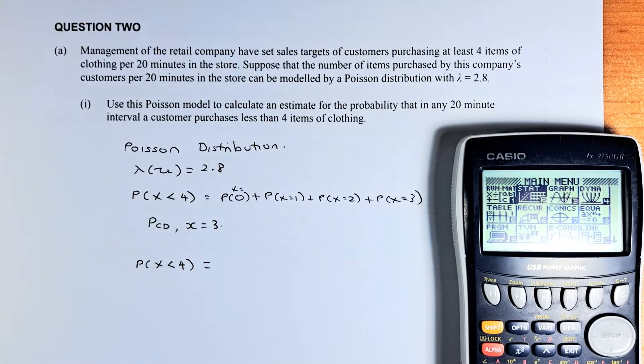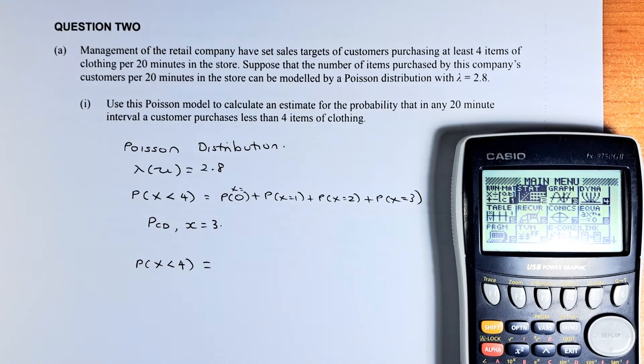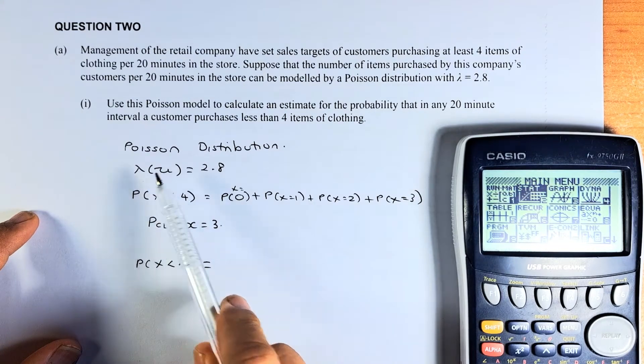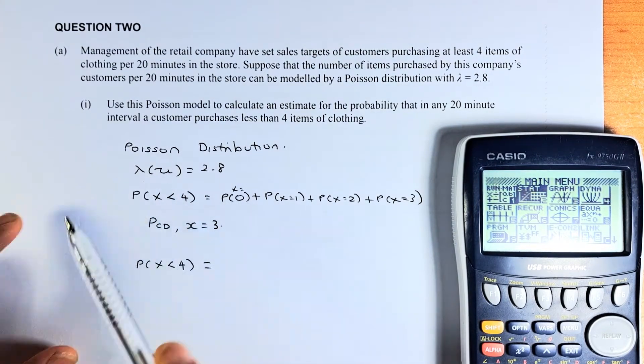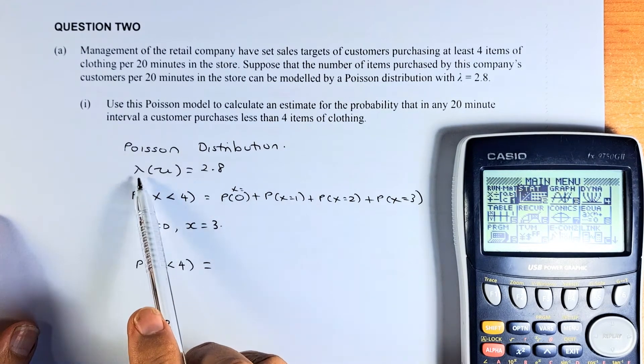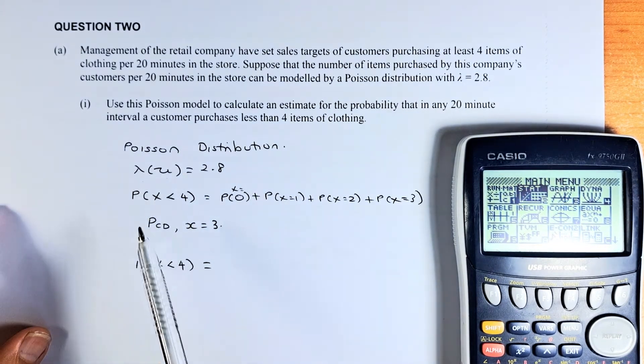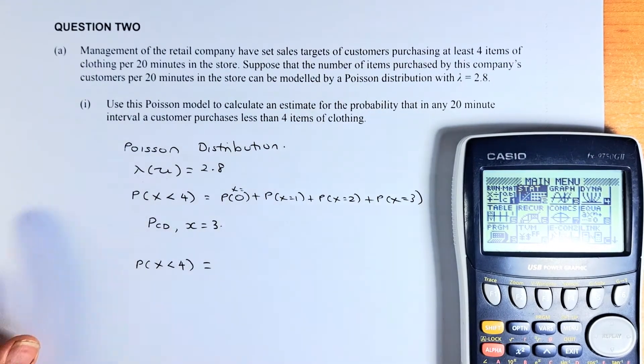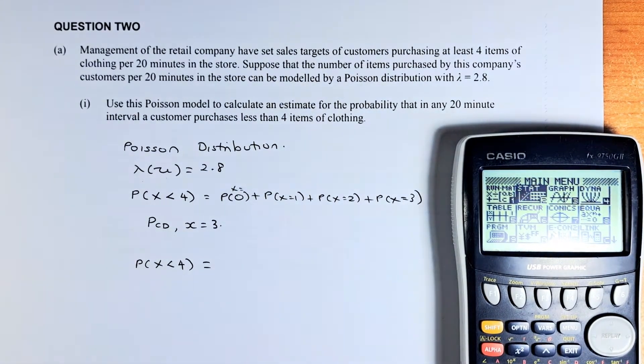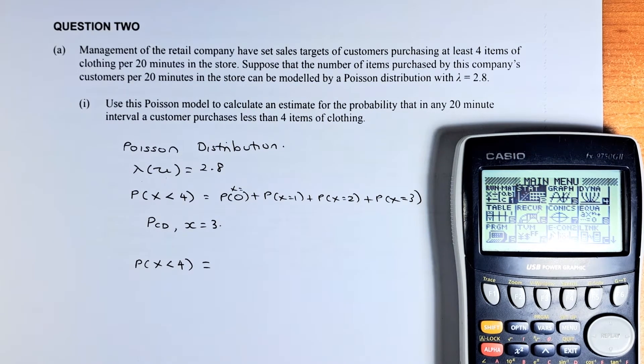This is a straightforward question. If you can get it right, you get an achieve in this paper. We are going to use Poisson Distribution. Lambda is 2.8, the mean. In the calculator, you have to convert lambda to mu. The question asks what is the probability that in any 20 minutes interval, a customer purchased less than 4 items?